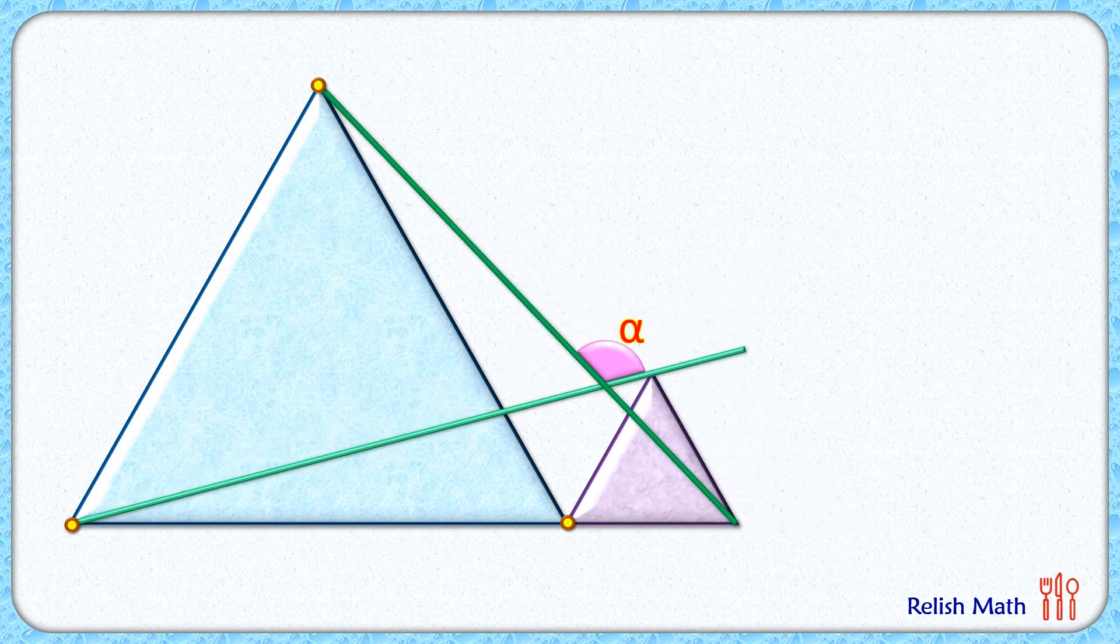This figure still meets all the original data of the question, and thus the value of angle alpha should remain the same. How about if we reduce the size of this purple triangle to a point triangle here?